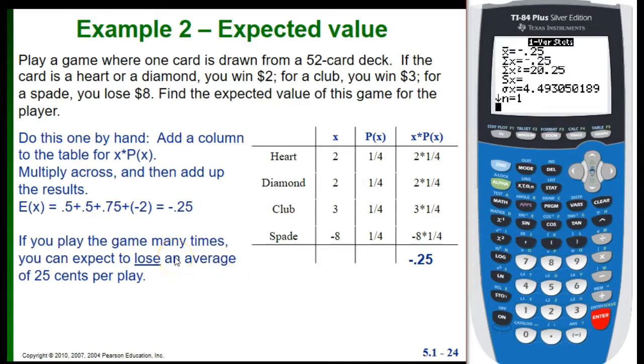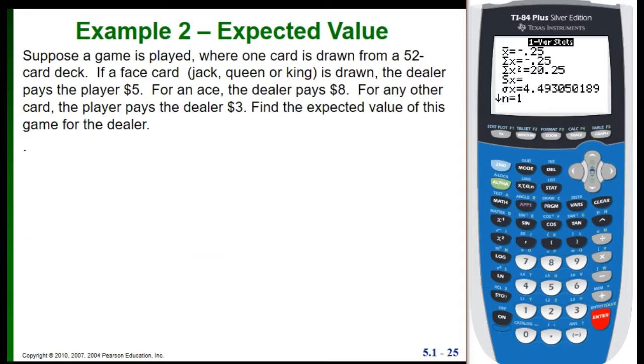What this means for expected value is that if you play the game a whole bunch of times in a row, you're going to lose an average of 25 cents per play. That doesn't mean that you're losing 25 cents on any one play, but if you play it a bunch of times in a row, that's the average amount of money that you lose per play. One more example.